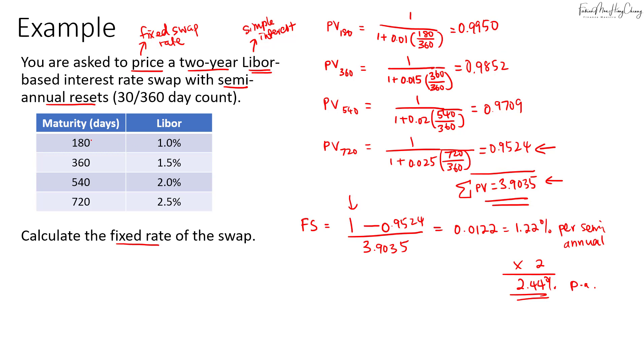And if in the exam, this is based on, let's say, quarterly, if this is based on, for example, 90, 180, 270, and 360, in this case, when you calculate the answer, it will be per quarter. So take note that the frequency here will be based on the number of days in maturity given. If this is based on 1 year, 2 years, 3 years, and 4 years, then the swap rate here will already be per annum.